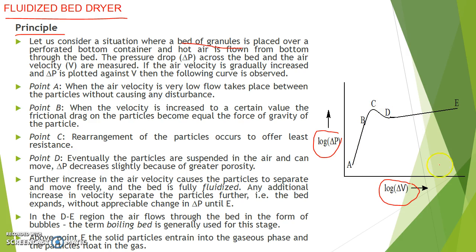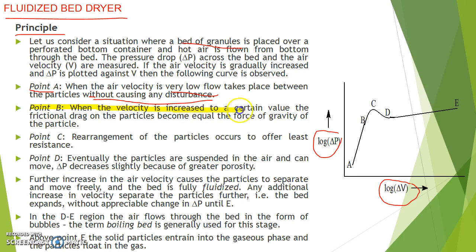In this curve, we see five points: A, B, C, D, and E. Point A indicates that when the air velocity is very low, flow takes place between the particles without causing any disturbance. At point B, when the velocity is increased to a certain value, the frictional drag on the particles becomes equal to the force of gravity of the particles.